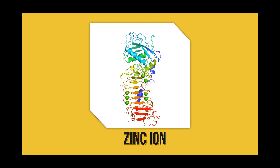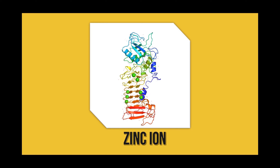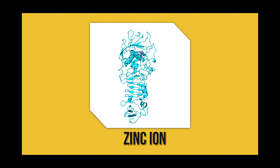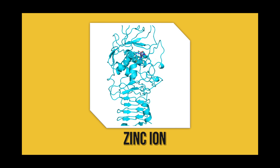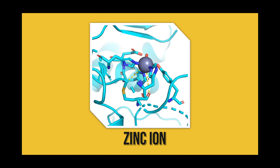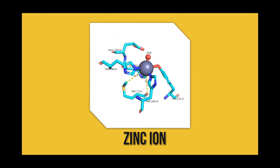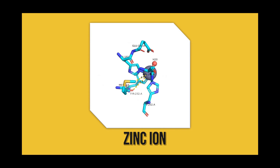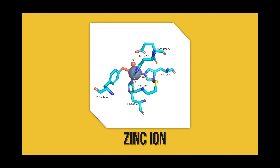The active site of serratiopeptidase contains a zinc ion bound to three histidine residues, one threonine residue, one methionine residue, one glutamine residue, and also one water molecule. This active site is used to hydrolyze the non-terminal peptide linkage of polypeptides.